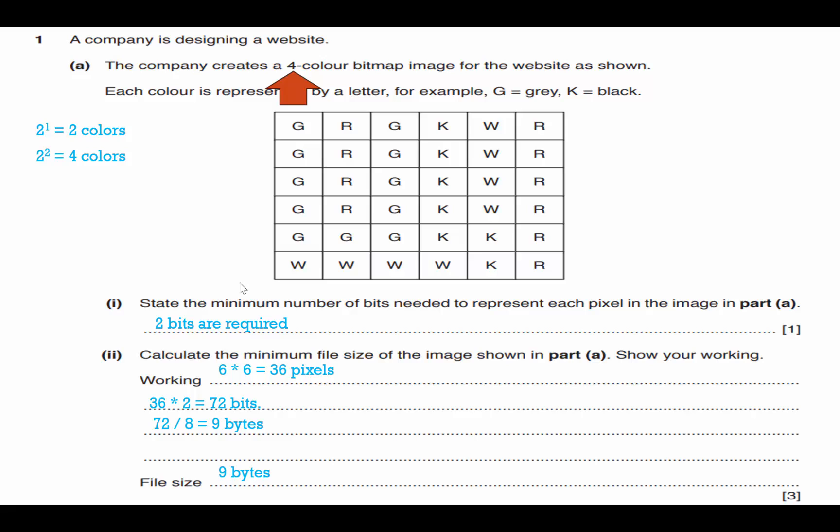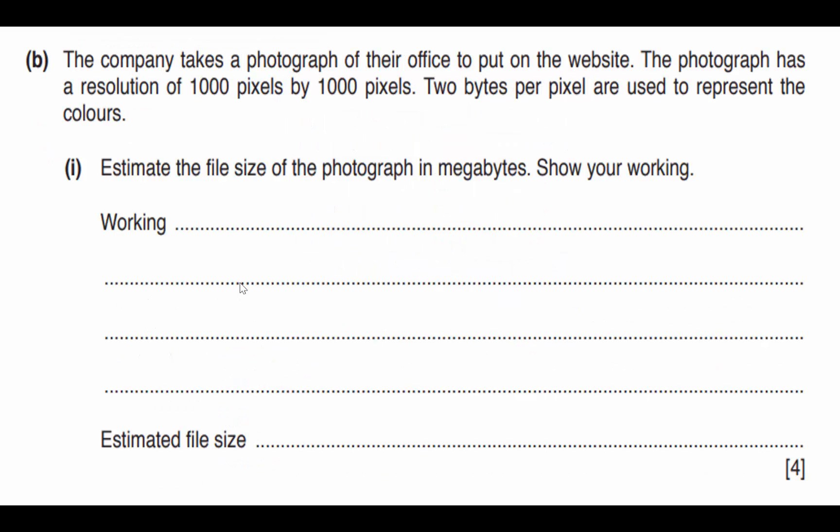Now, if you leave it at 72 bits because it doesn't tell us what we have to convert it to 72 bits or nine bytes, both of these would be acceptable. And we just picked up four out of 75 points on this exam. However, there's part B, which is worth another four points, allowing us to pick up more than 10% of the points possible on the paper one exam. So let's dive into this one.